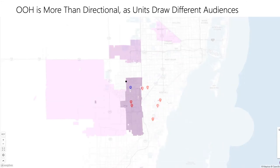Here's another example of one of those directional signs that is drawing from another audience — and this audience happens to be where there are a lot of competitors. So they may want to add on to this buy with not just the directional, but more inventory in the area where their competition is.